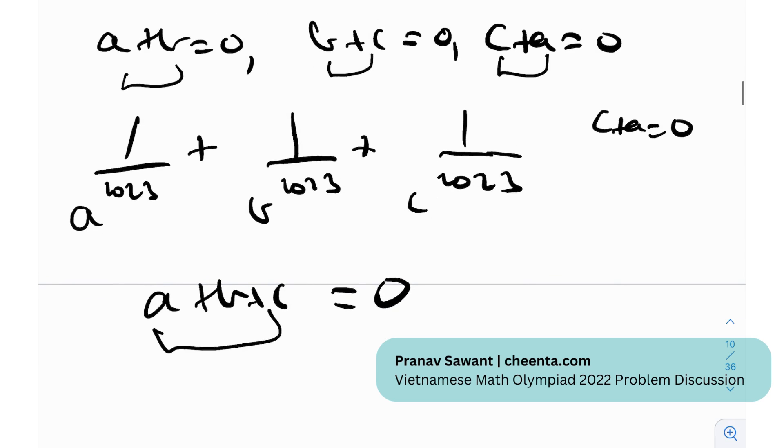For example, let's consider c+a equals 0. Let's consider that as 0. So c+a, this is 22 actually. Really sorry about that. So c+a equals 0.